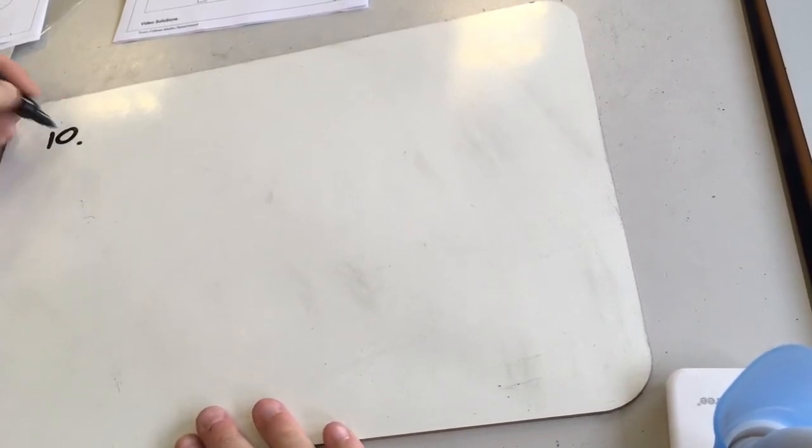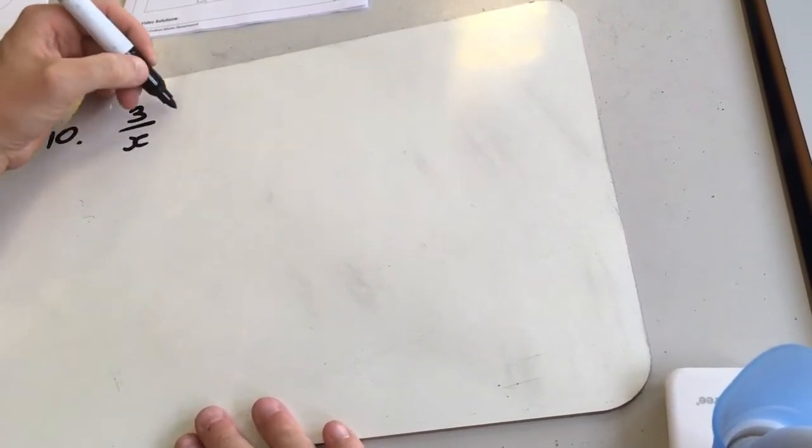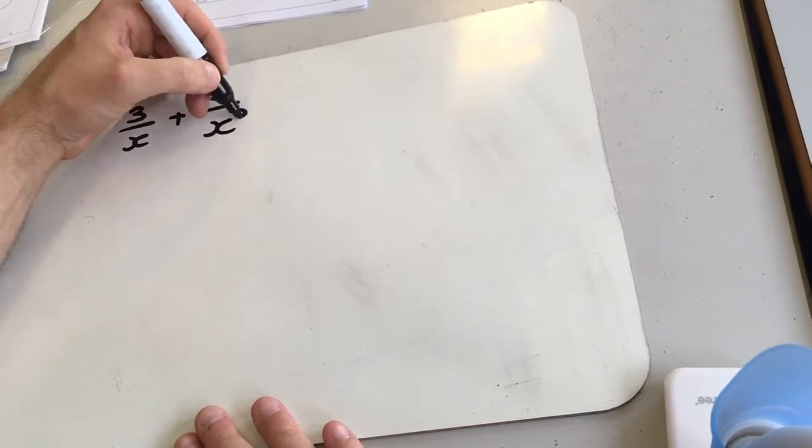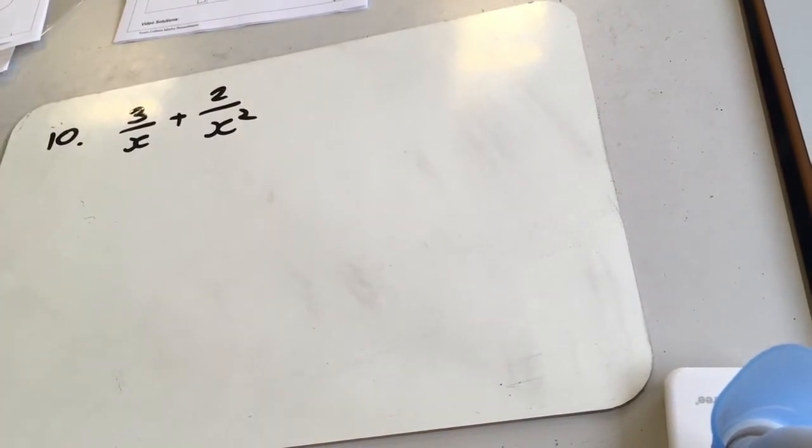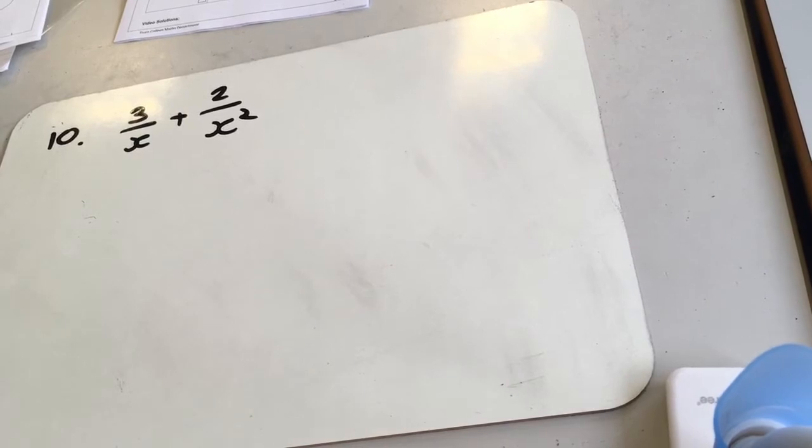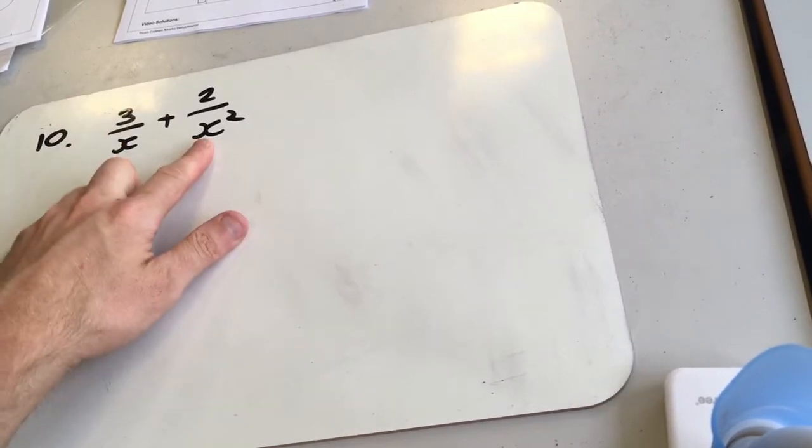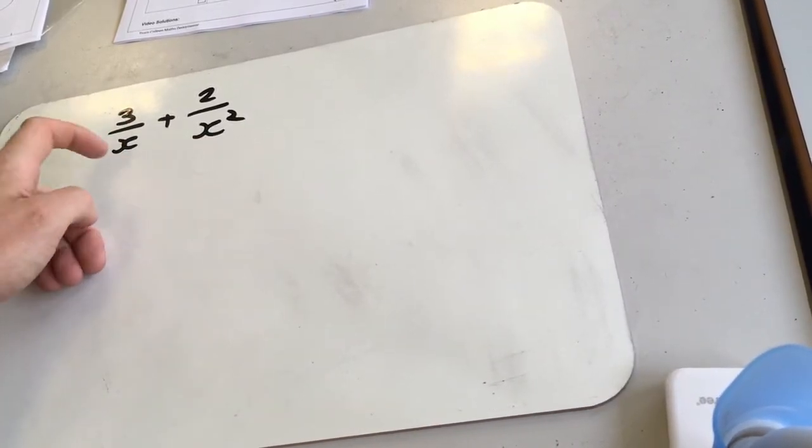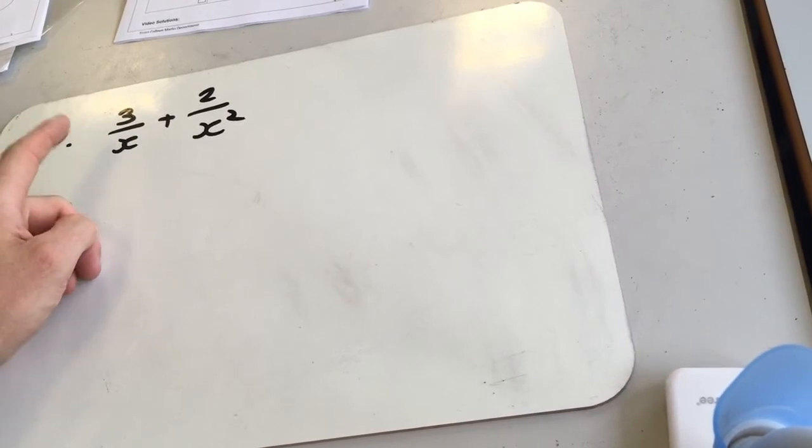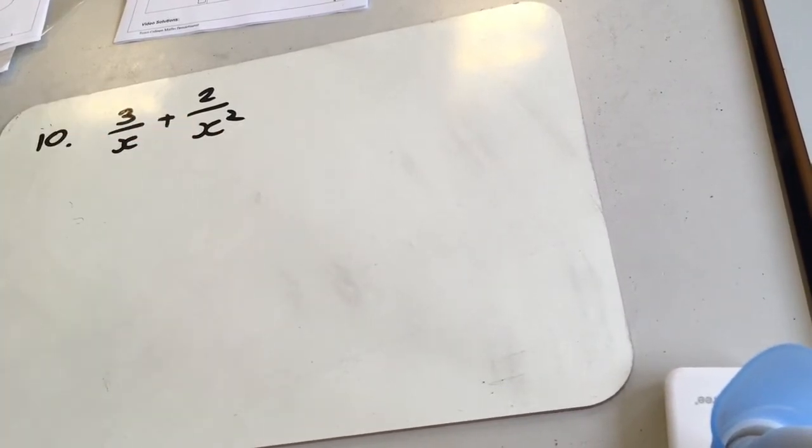All right, question 10. So we've got 3 over x plus 2 over x squared. Okay, so in order to add these together, you need a common denominator. Easiest way to do that, we've got x squared here, we've got x here. So if we times the whole of this fraction by x on top and x on bottom, we'll have the common denominator of x squared.